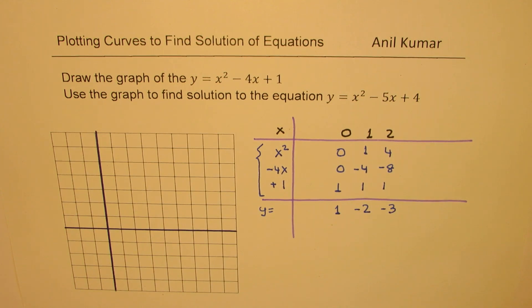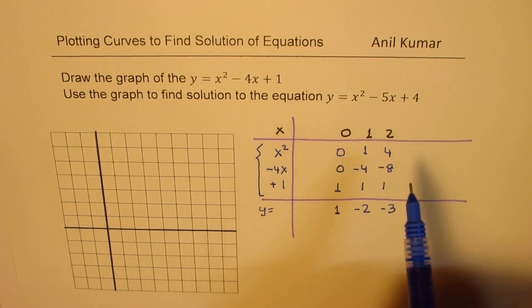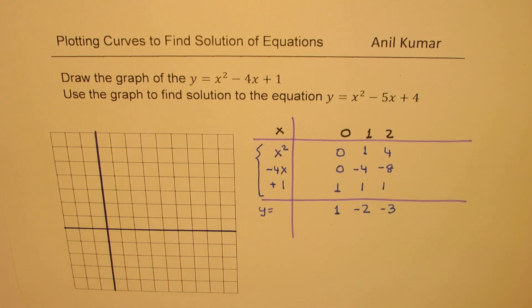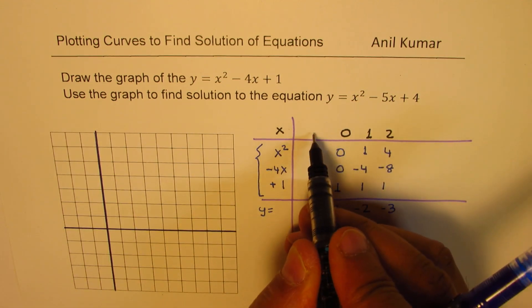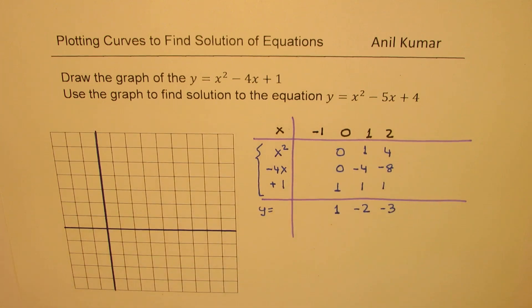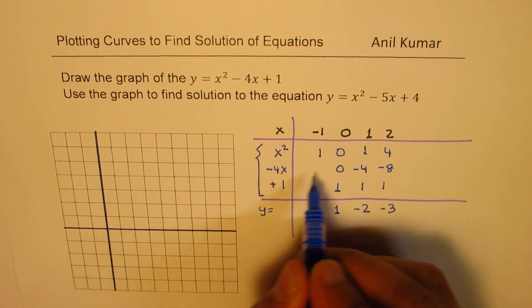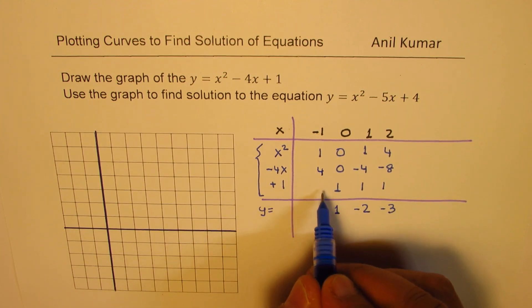Now let's see on this side what values are we getting. So we'll check the value for x equals minus 1. So if I put minus 1 here, square is going to be 1, minus and minus makes positive 4, and 1.